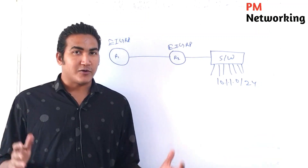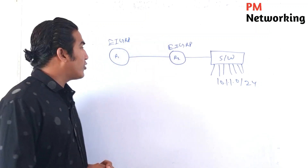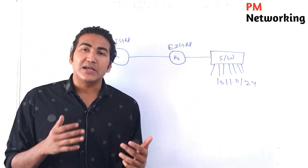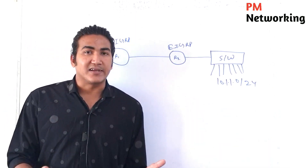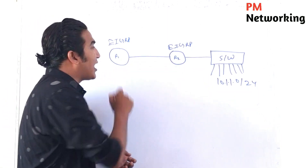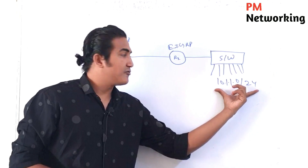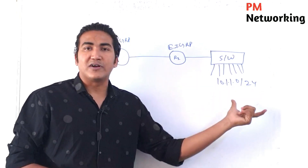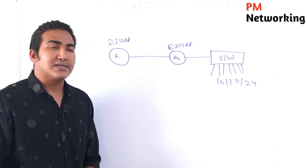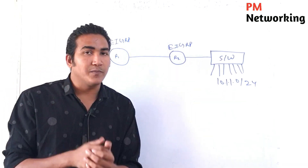Hello everyone, hope you all are doing great. Today in this video we are going to discuss how an EIGRP router calculates metric. In this scenario we will discuss how R2 and R1 will calculate metric for the 10.1.1.0/24 network. You will also understand what is FD and what is RD — what do you mean by Feasible Distance and what do you mean by Reported Distance.